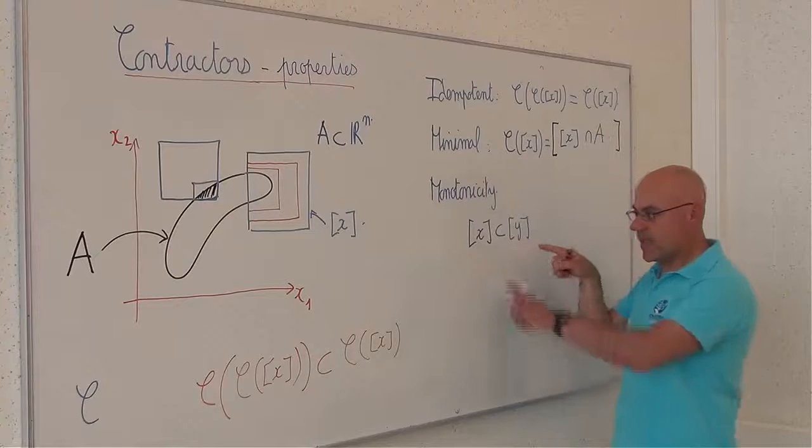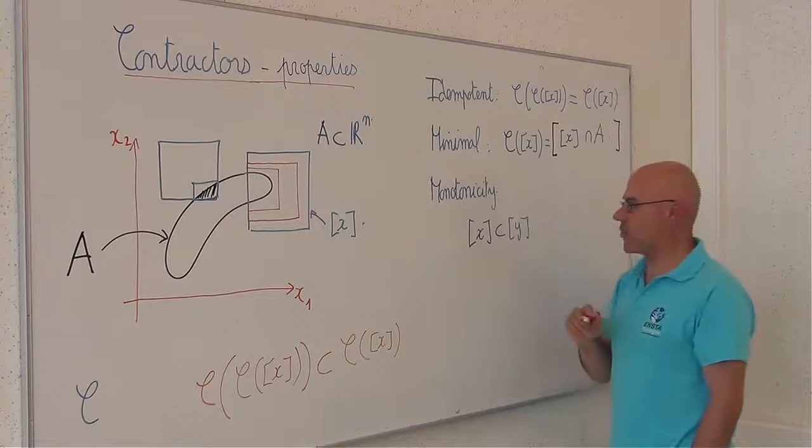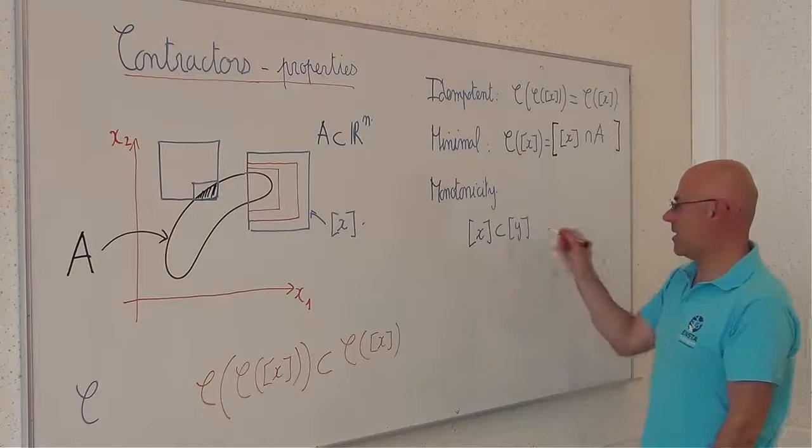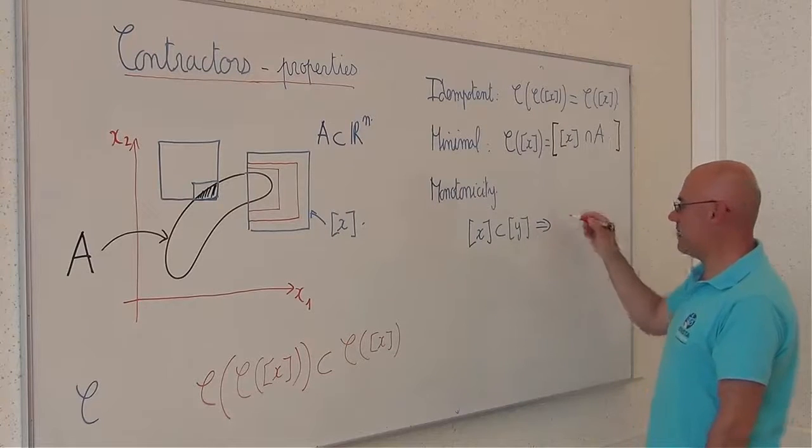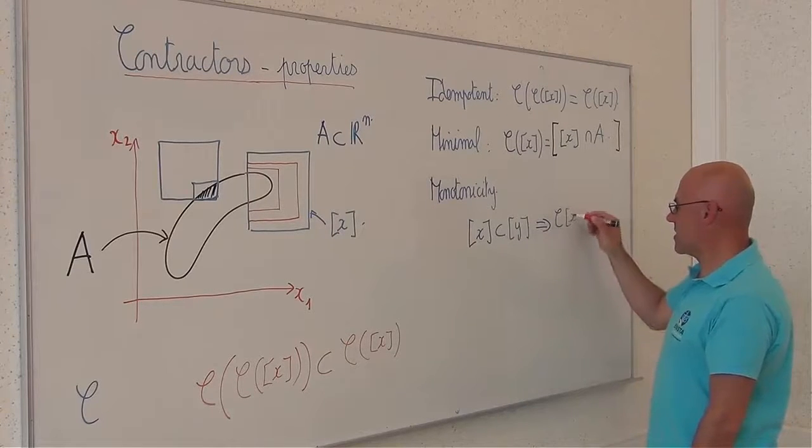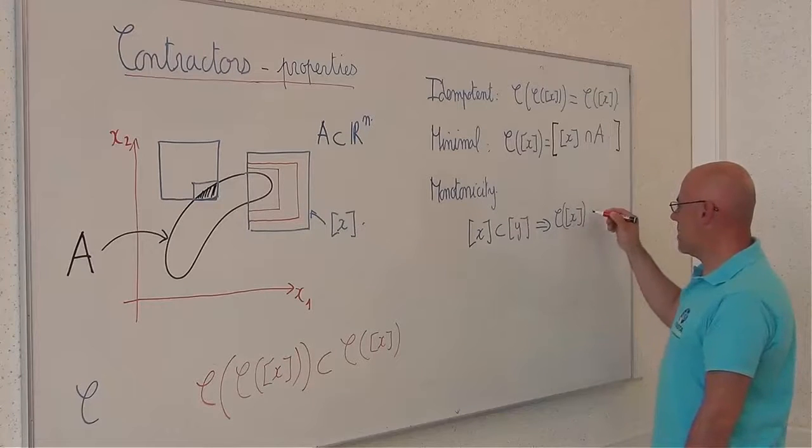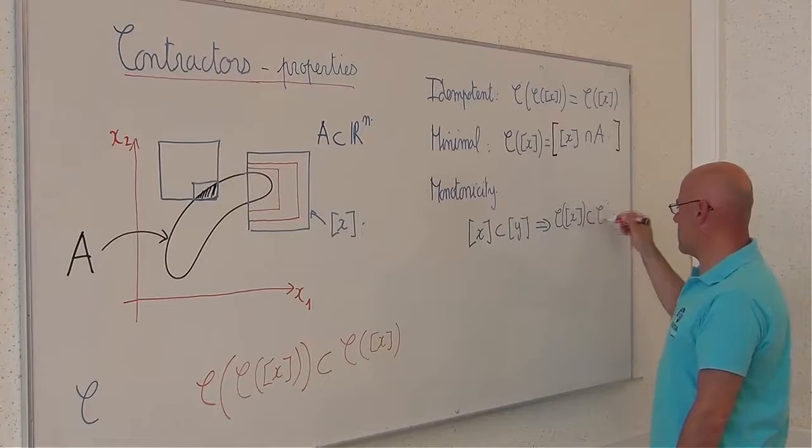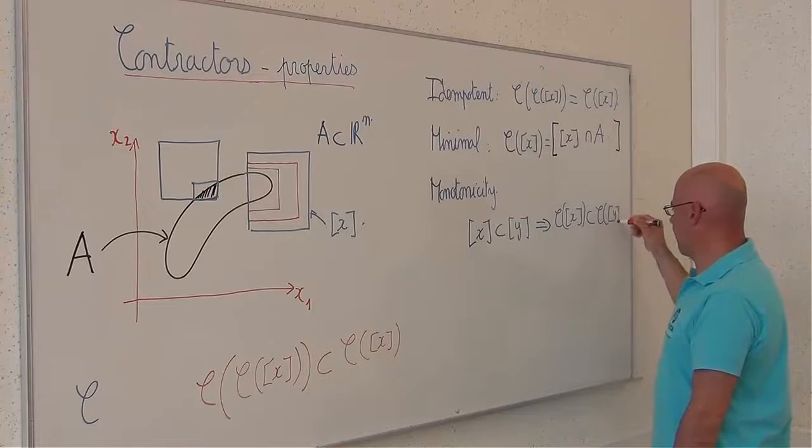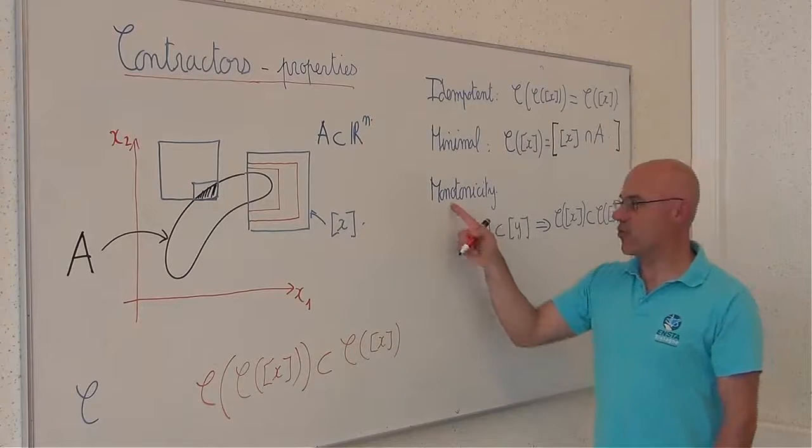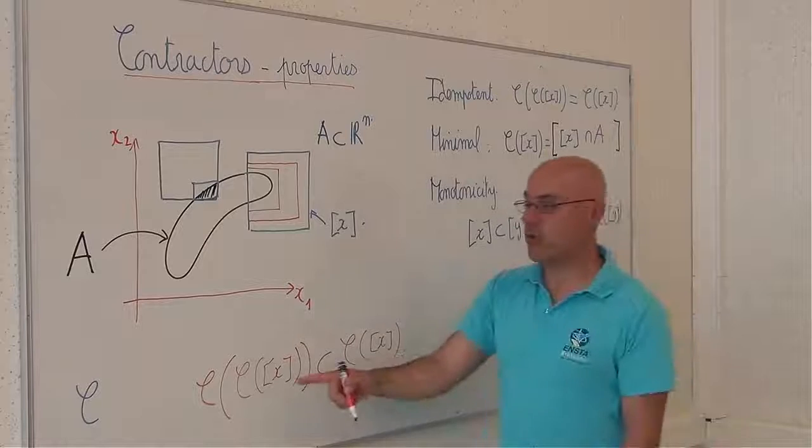If this inclusion exists still after contraction, it means that if this implies that C of X is included in C of Y, then my contractor is said to be monotonic.